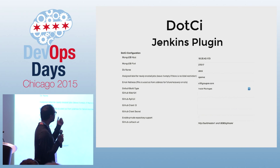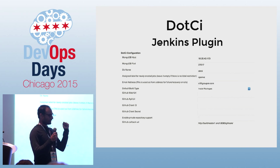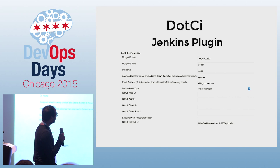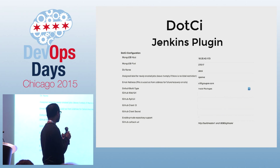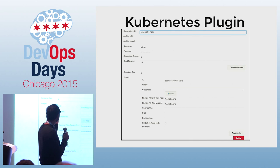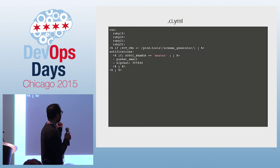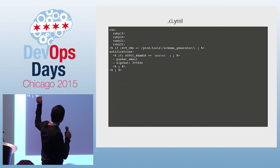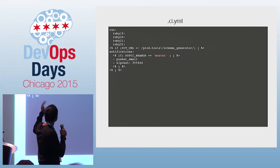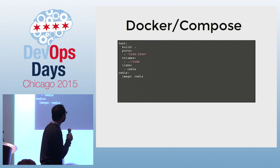The .CI plugin hooks up with GitHub, does stuff like setting up commit statuses and GitHub hooks. There's also a Kubernetes plugin — you can point your Kubernetes instance to Jenkins and choose the Docker image you want to use as your Jenkins slave. You can specify container instances. This is an example of a .ci.yml where the build is parallelized to run tests against five versions of Ruby.